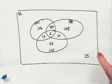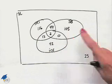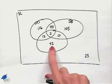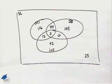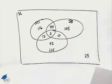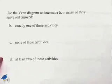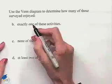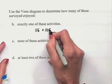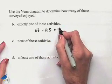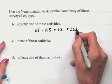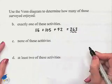We also have 105 who answered for snowboarding only, and 42 who liked ice skating only. Taking these three regions and adding them together: 116 plus 105 plus 42 totals 263. So 263 people enjoyed exactly one activity.